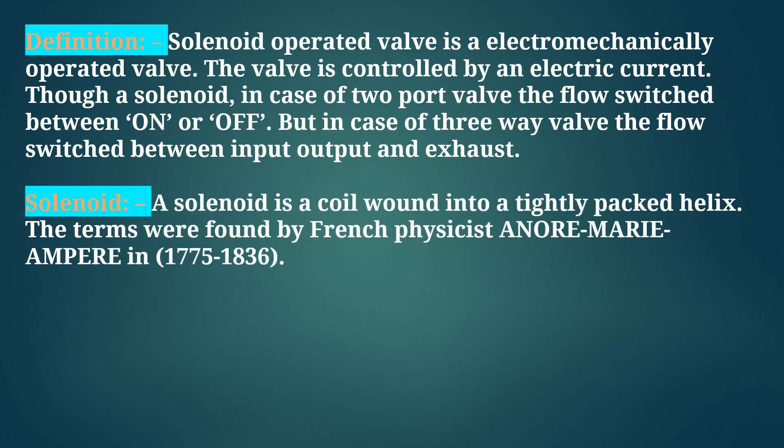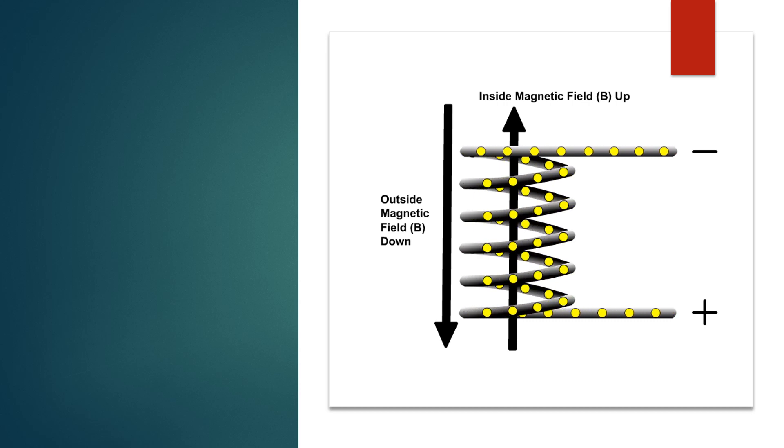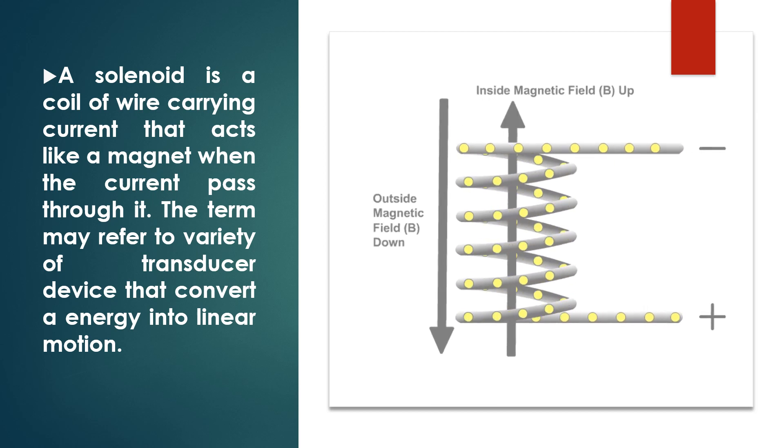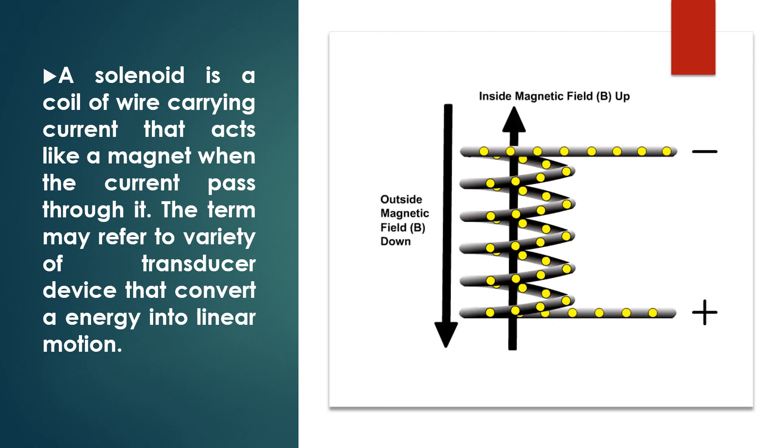What is a solenoid coil? A solenoid is a coil wound into a tightly packed helix. The term was found by French physicist André-Marie Ampère. If we see in detail, a solenoid is a coil of wire carrying current that acts like a magnet when the current passes through it. The term may refer to a variety of transducer devices that convert energy into linear motion. You can see in the graphic that current is flowing inside a magnetic field.